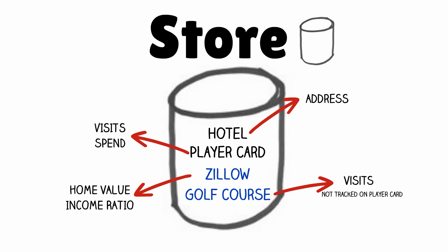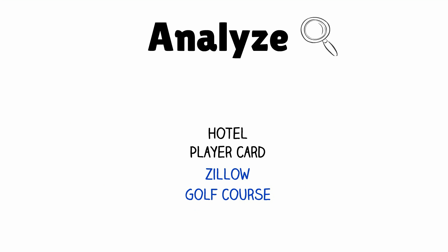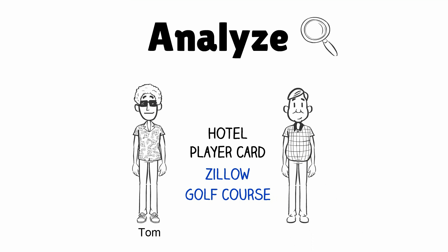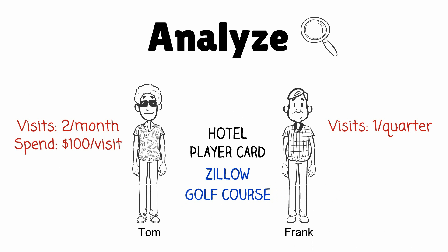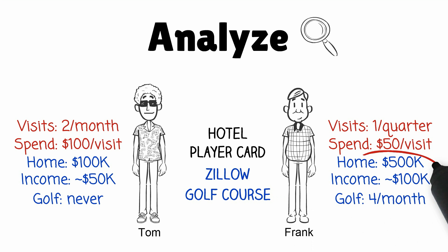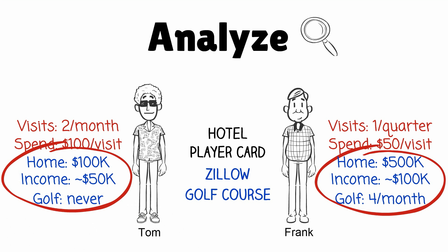Take a look at all the insights we can gain from the data gathered. Now the casino can use the data they've collected to help better understand two of their customers, Tom and Frank. Previously, the casino only knew the number of visits each made and the amount of money they spent each visit. With the new data sets, the casino is able to gather far more detail about their customers. Look at how frequently Frank visits their golf course — this data was never analyzed previously when the casino would target customers for player compensation plans.